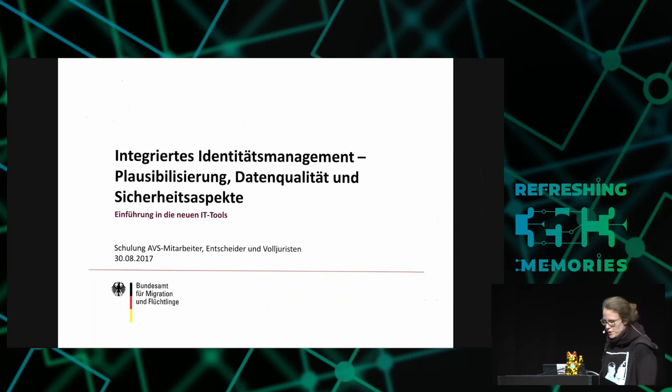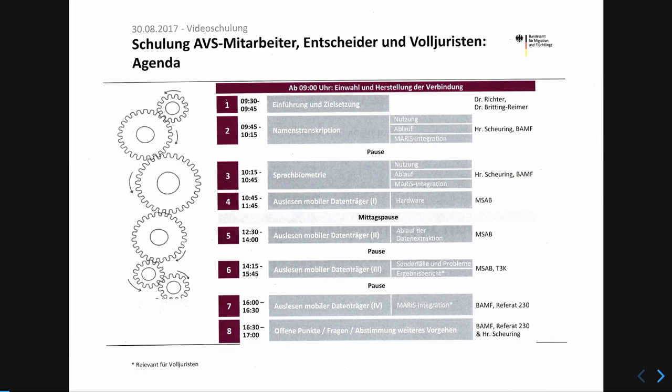We'll be talking about computers that make decisions on asylum, or contribute to decisions on asylum. The relevant ministry is using what it calls integrated identity management, plausibility, data quality and security systems. The BAMF — the ministry for migration and refugees — has been using these for one and a half years. They cover: name transliteration from Arabic to Latin letters, language biometrics for dialect analysis, and mobile device data analysis.